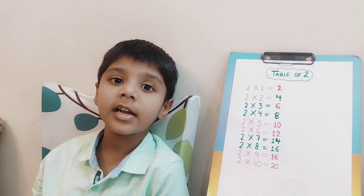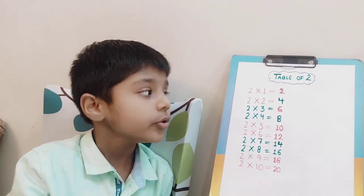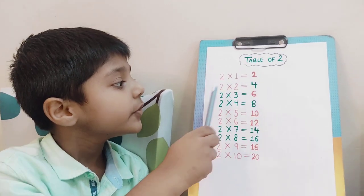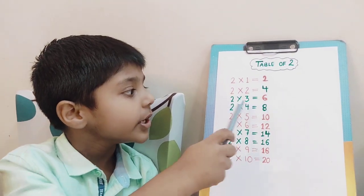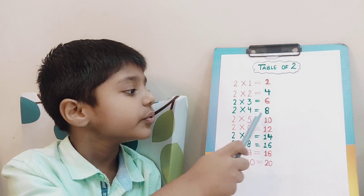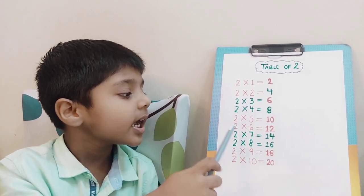Today we will learn the table of 2. 2 ones are 2, 2 twos are 4, 2 threes are 6, 2 fours are 8, 2 fives are 10.